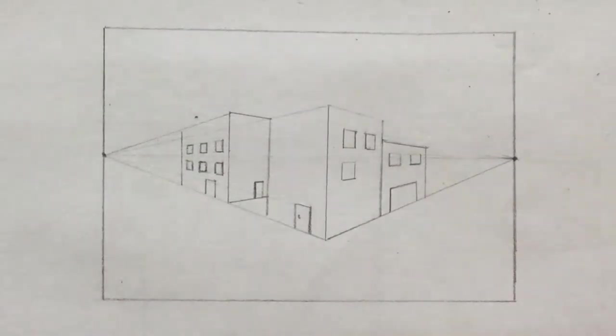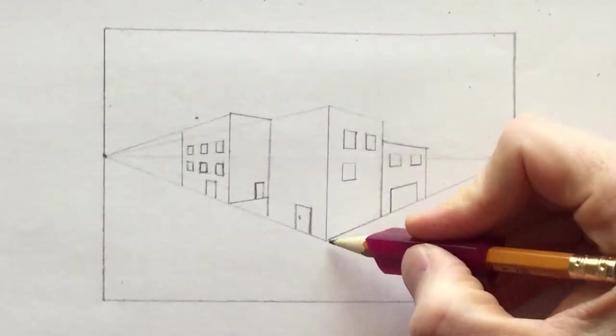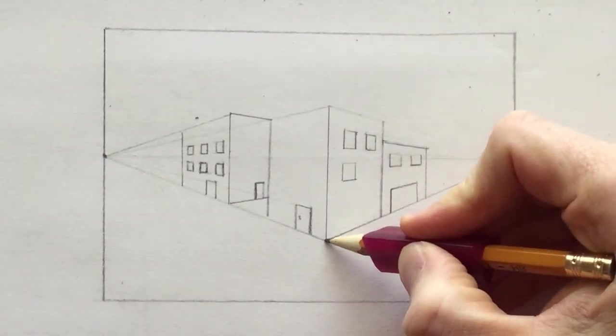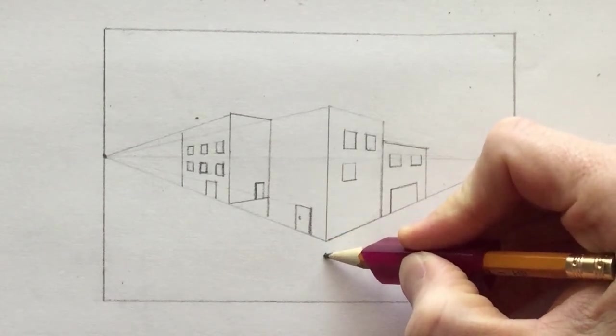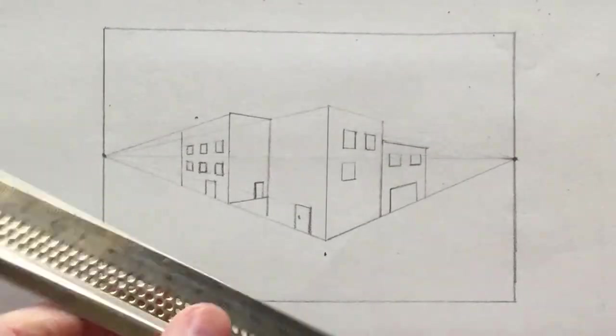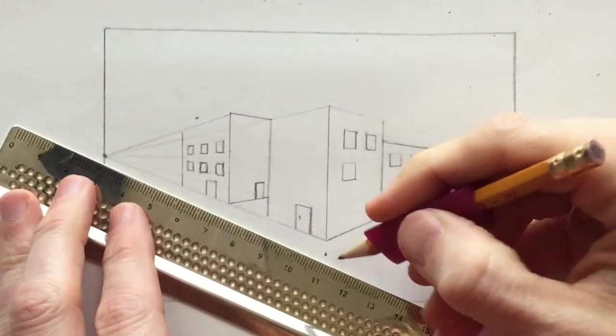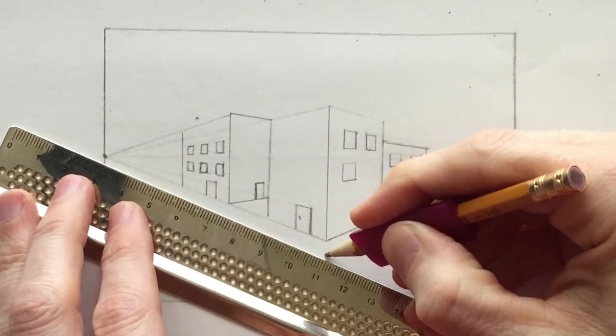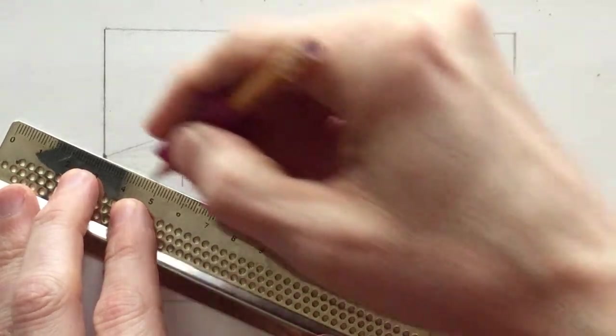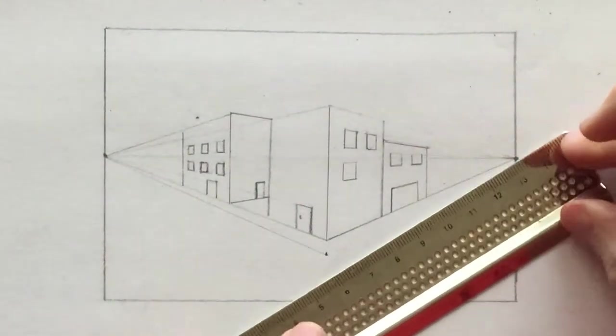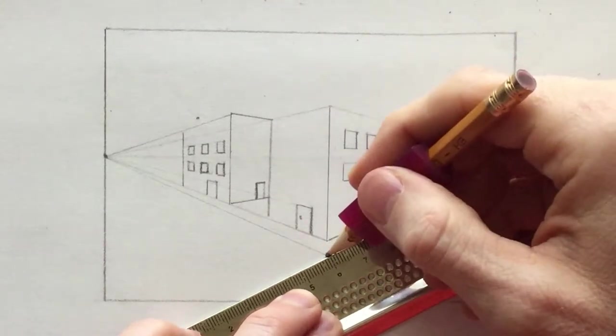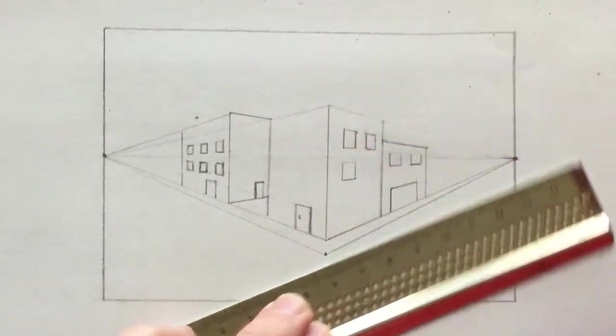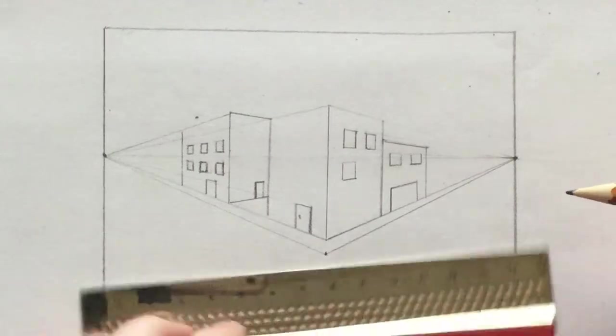For the sidewalk, we have to think about the idea that it's going to go around the buildings at the bottom. I'm going to take the corner of the building closest to us and just drop it about a centimeter. Then I'm going to have that dot go also to the vanishing point, because even the sidewalk is going to appear to get smaller as it gets further away from us and will behave like the buildings do when it comes to perspective.